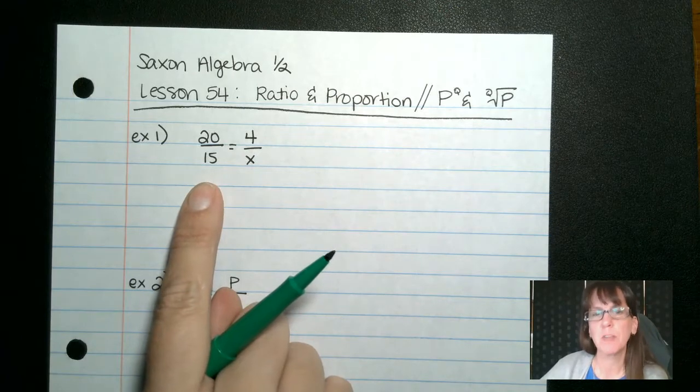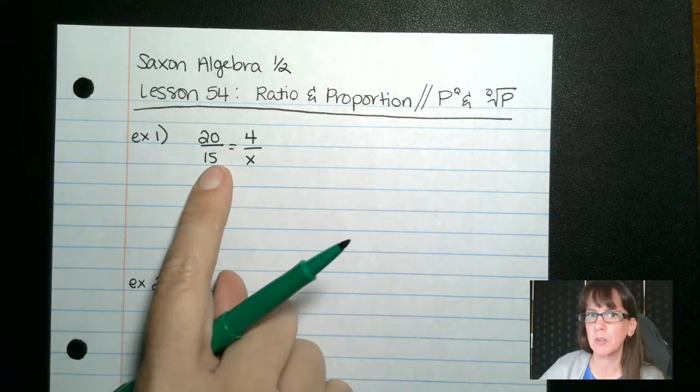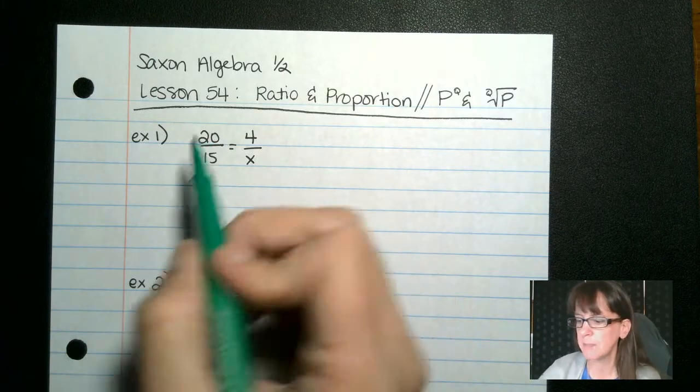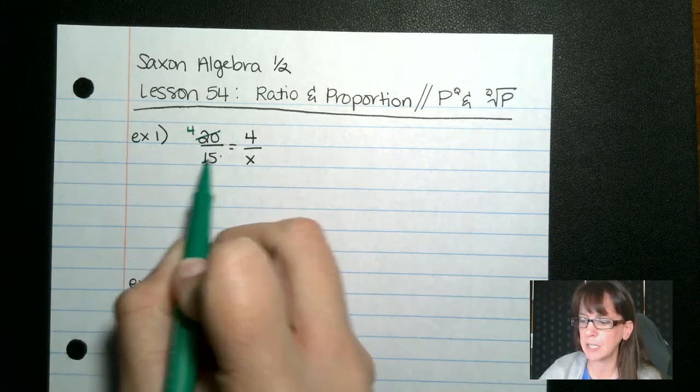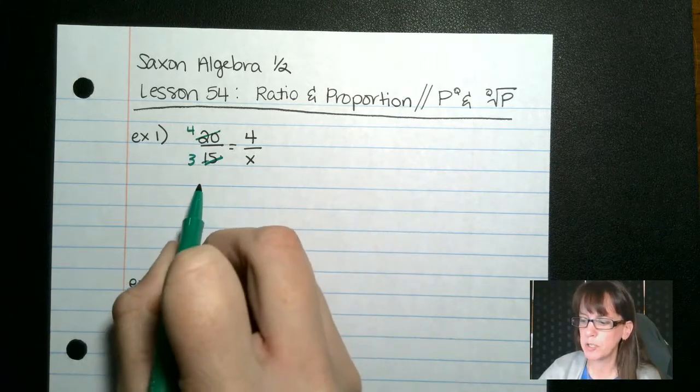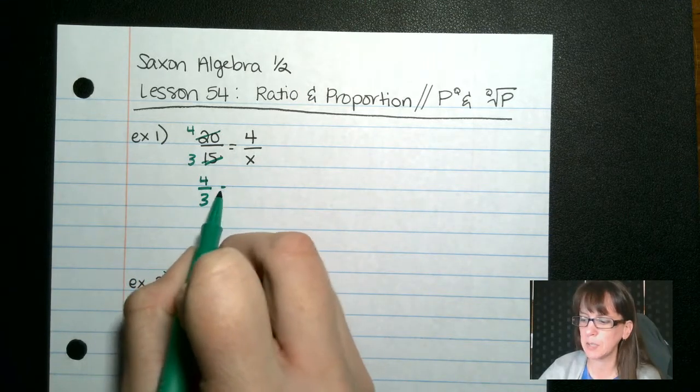Okay, taking a look at this problem, there's two ways that we can do it. I'll show you the first one. We can see that we can reduce this. If we divide by 5, we get 4. Divide by 5 here, we get 3. So our new proportion that we have is 4 over 3 equals 4 over x.